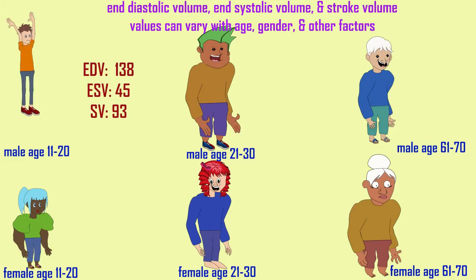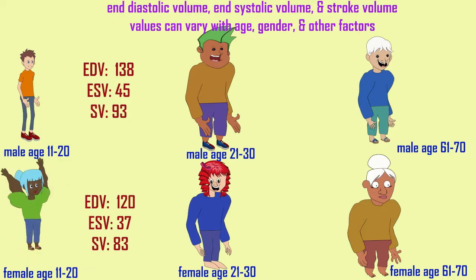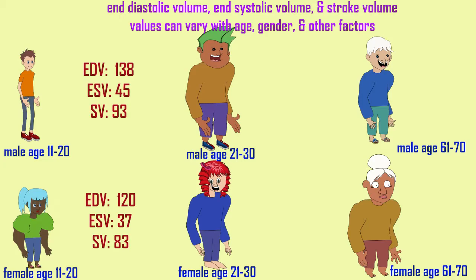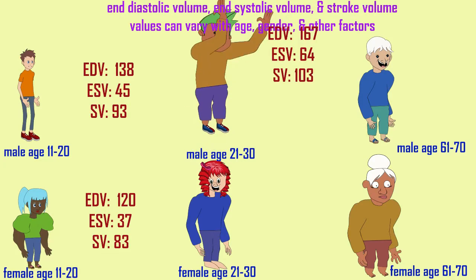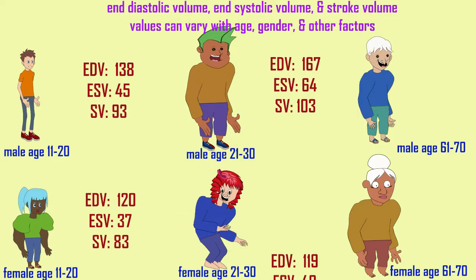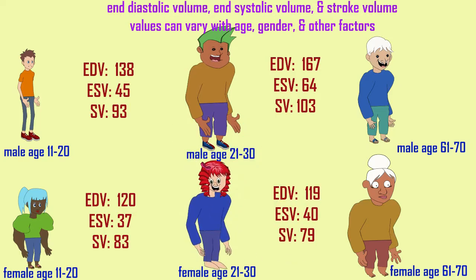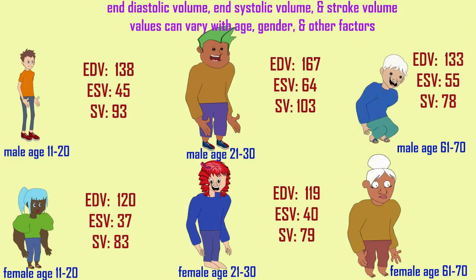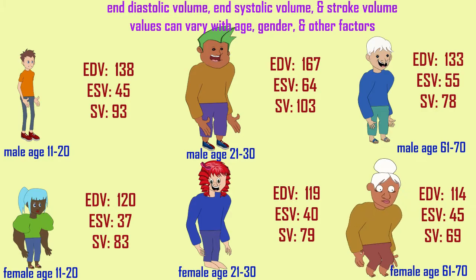It should be noted, however, that the numbers for end diastolic volume, end systolic volume, and stroke volume are just typical examples used here. Obviously, the size of one's heart will cause these values to vary, and that can change over the course of one's life. There are gender differences and differences between young people, adults, and older adults. It can also change as heart rate changes, because a slower heart rate will allow more time for ventricular filling. These are not absolute values, but simply average values used here.